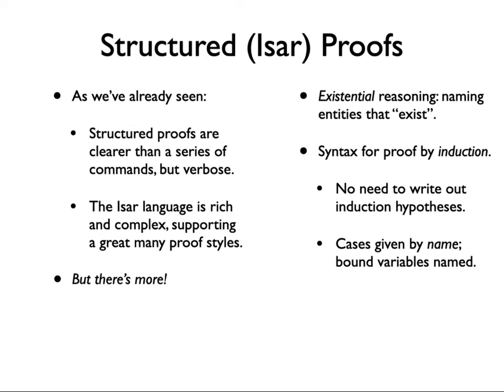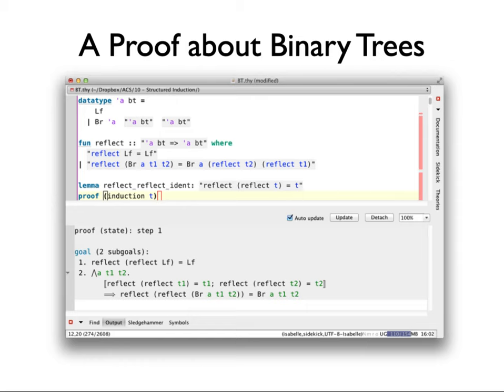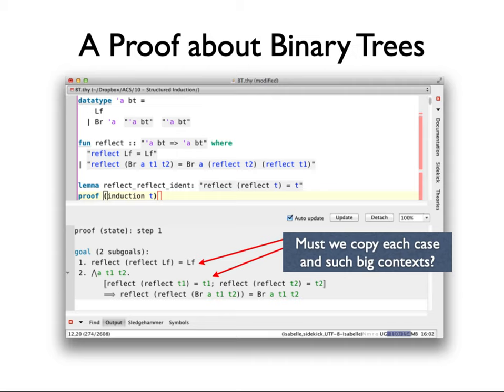In particular, when we do induction, the ability to do inductions without having to copy out the induction hypotheses and the conclusion is going to be necessary. Similarly for case analysis. So here are our binary trees again. Those of you who did Foundations of Computer Science will probably recognize these binary trees and the reflect function, which we've seen before. There is a proof that reflect of a tree gives you back the tree you started with. Now here we're trying to do it as a structured Isar proof, so we do our induction and now we have the two sub-goals — the standard sub-goals you'd expect from induction.